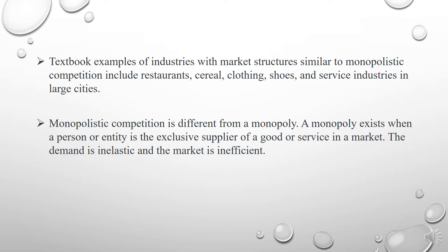Monopolistic competitive markets have products that are highly differentiated, meaning that there is a perception that the goods are different. They have many firms providing the goods or service. Firms can freely enter and exit in the long run. Firms can make decisions independently. There is some degree of market power, meaning producers have some control over the price, and buyers and sellers have imperfect information.